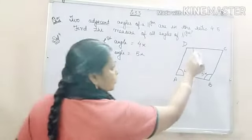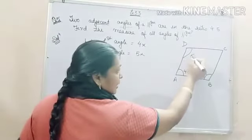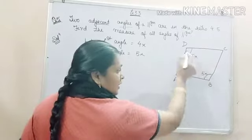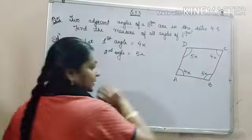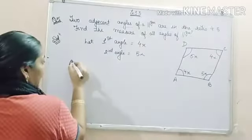And you know that the opposite angles of a parallelogram are equal. So it will be 5x and here it will be 4x. Adjacent angles of a parallelogram are supplementary.